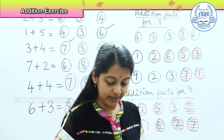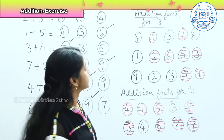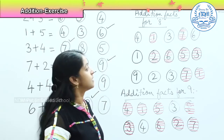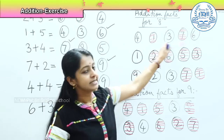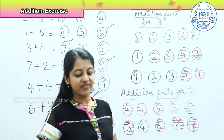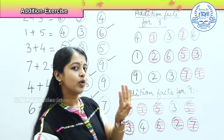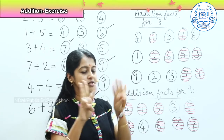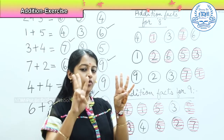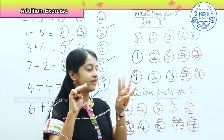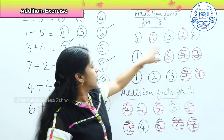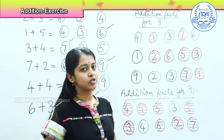Shall we do a quick recap of what we have learnt? For addition fact 8, what were the possibilities? 1 and 7. Why could we not add 4 and 3? If I take 4 in one hand and 3 in another, the total I get is 1, 2, 3, 4, 5, 6, 7 — but I want the answer number 8. So 4 and 3 is not possible.